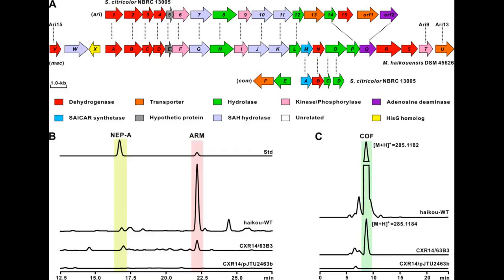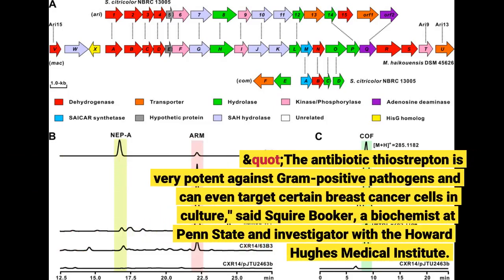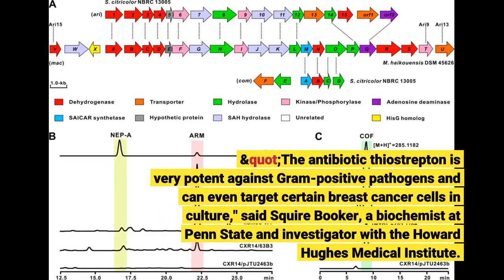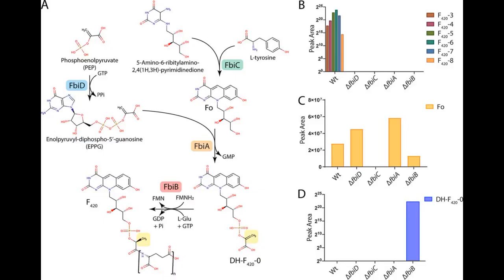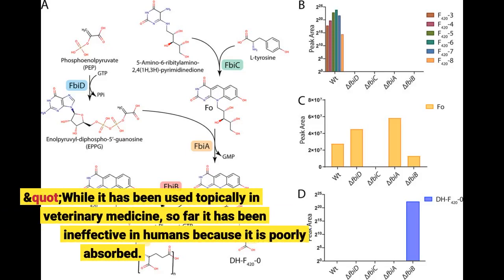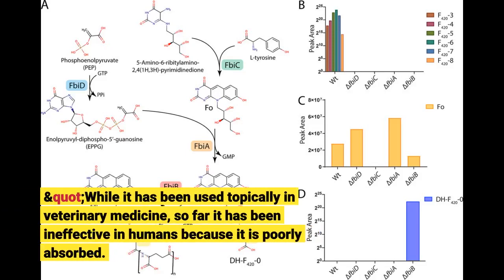The antibiotic thiostrepton is very potent against gram-positive pathogens and can even target certain breast cancer cells in culture, said Squire Booker, a biochemist at Penn State and investigator with the Howard Hughes Medical Institute. While it has been used topically in veterinary medicine, so far it has been ineffective in humans because it is poorly absorbed.